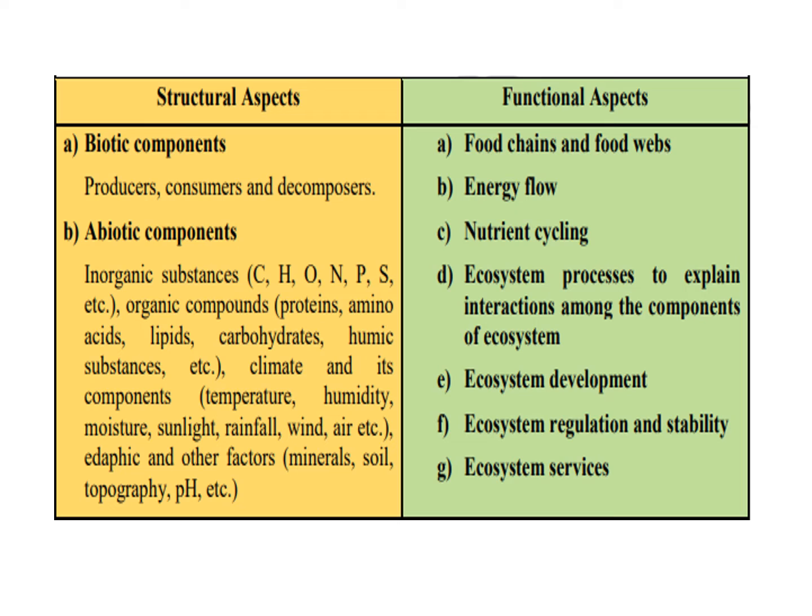The main and most important of the functional aspects are your food chains and food webs. Through these food chains and food webs, there is a constant energy flow. There is also nutrient cycling going on through the ecosystem, as well as regulation and stability of the ecosystem through all of these processes.